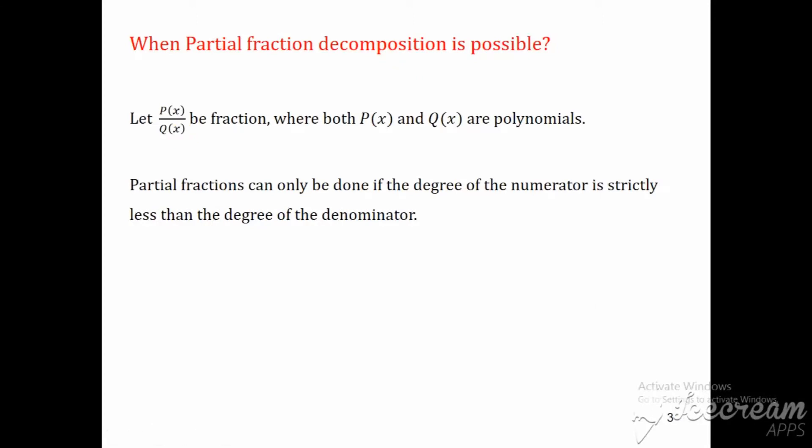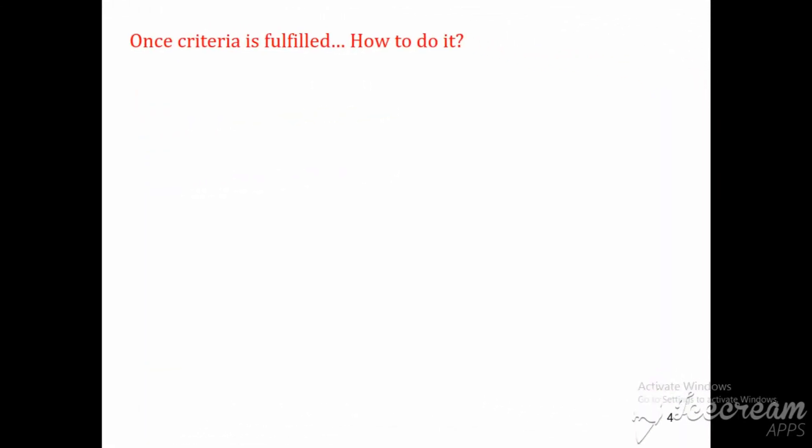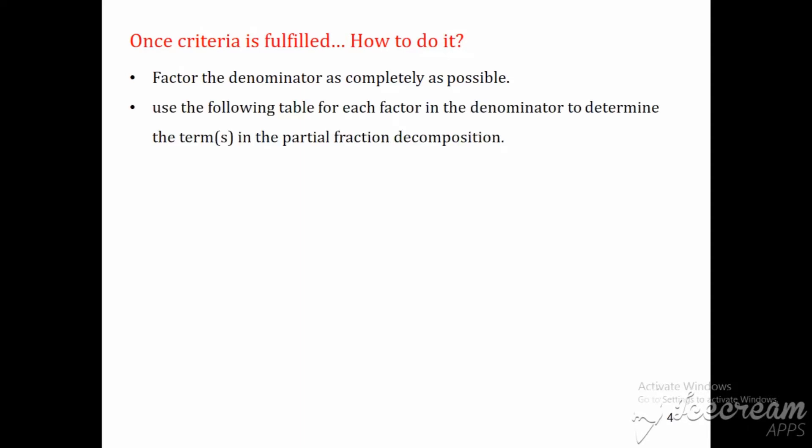Once the criteria is fulfilled, we will see how to do this decomposition. First of all, we will factorize the denominator as completely as possible. After that, we use the following table for each factor in the denominator to determine the terms in the partial fraction decomposition.